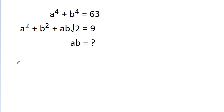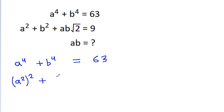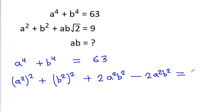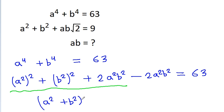We have given that a⁴ + b⁴ = 63. We can write a⁴ = (a²)² and b⁴ = (b²)². If we add 2a²b² then we also need to subtract 2a²b², giving us (a² + b²)² - 2a²b² = 63.